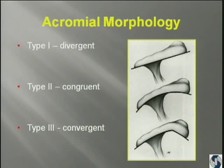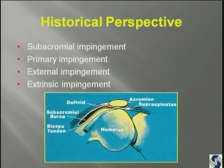Those are the three types of acromions. The names that eventually got put on this were subacromial impingement, primary impingement, external impingement, and extrinsic impingement. This slide was being used by Frank Jobe when I was a fellow many years ago.